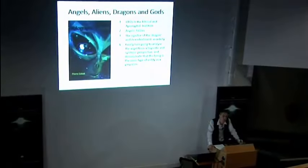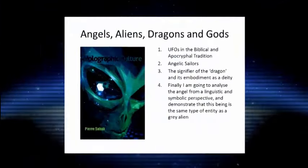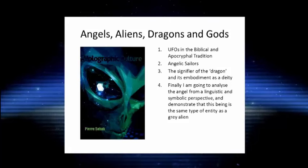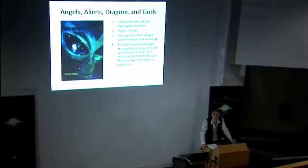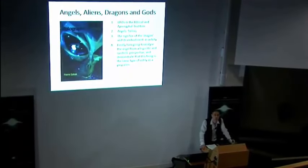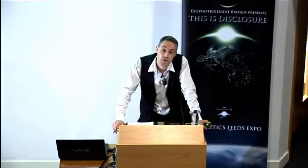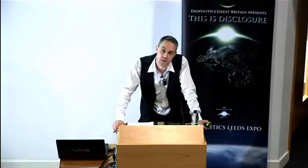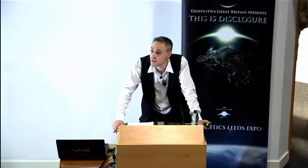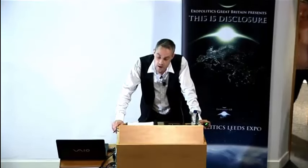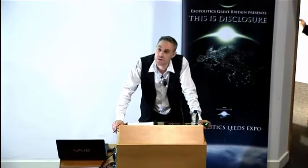We'll look at the signifier of the dragon. The dragon primarily is a signifier of a deity, and is interlinked with the seraphim, or the serpentagina, or the anguagina as they were known in Latin. In Arabic they are referred to as the jinn, and I'm going to be arguing that the angels and the jinn are very closely related species, though early Islamic scholars certainly did not make this type of distinction.